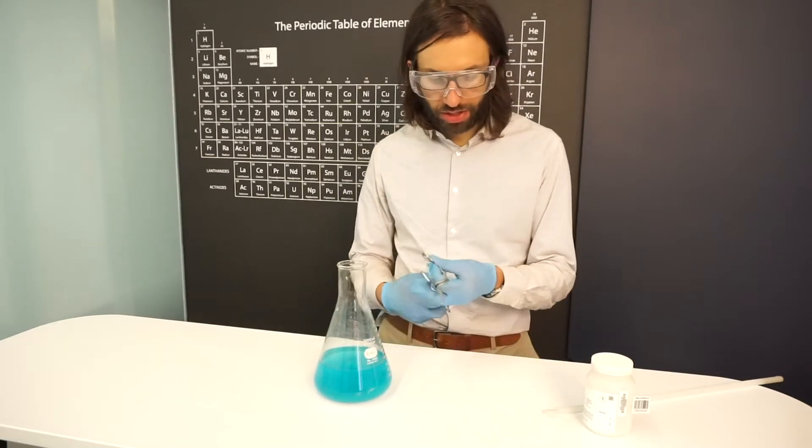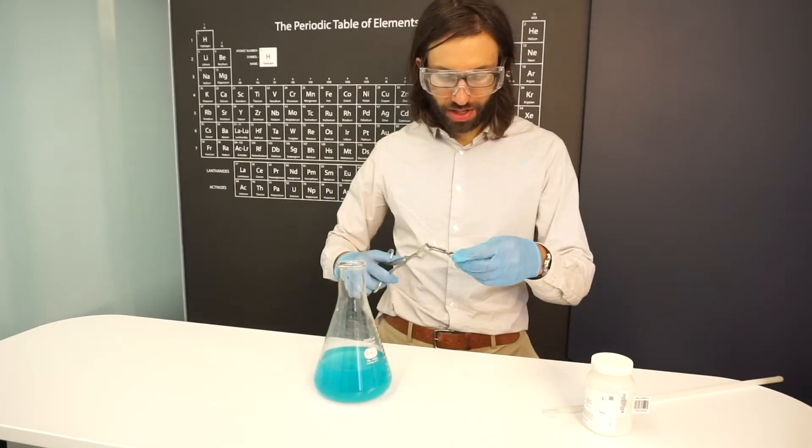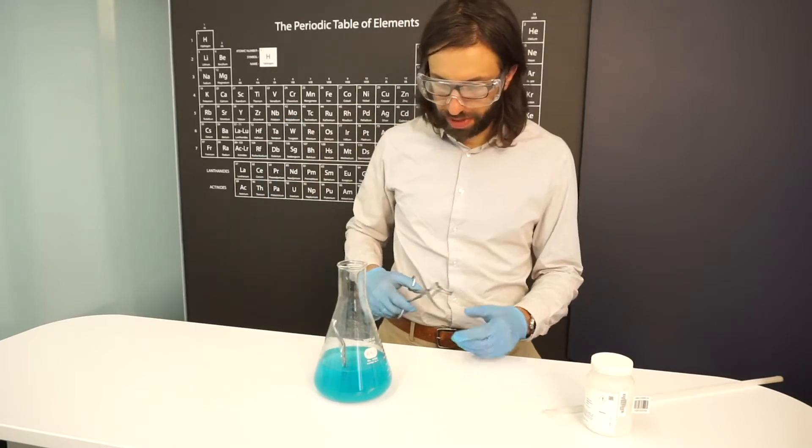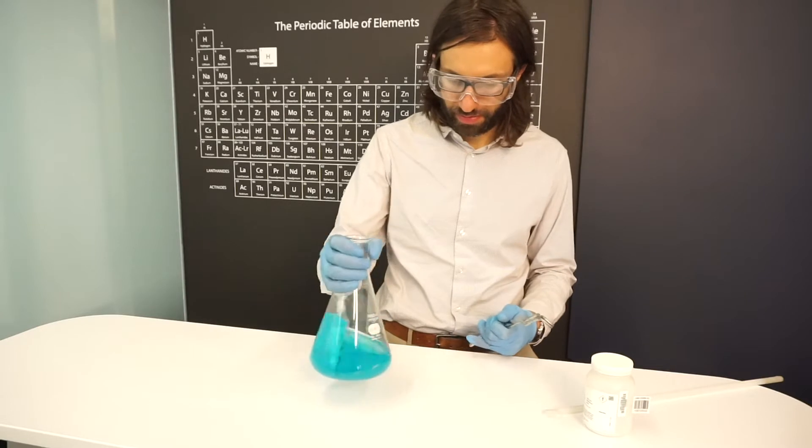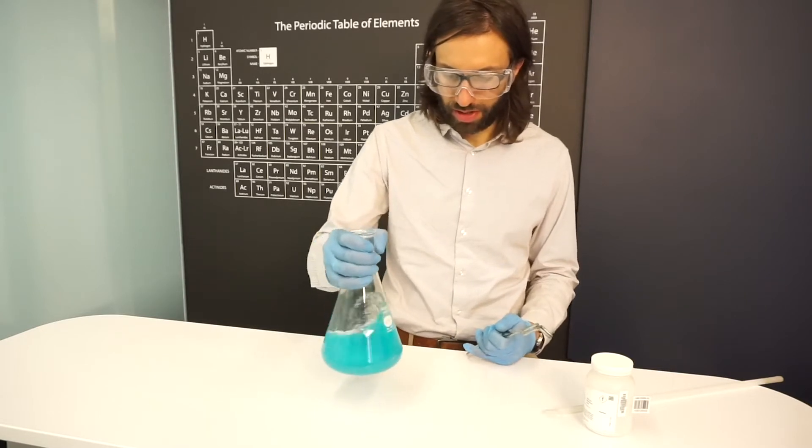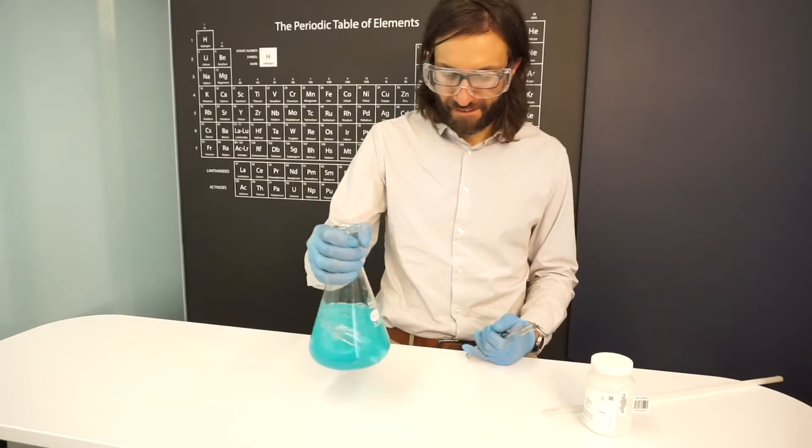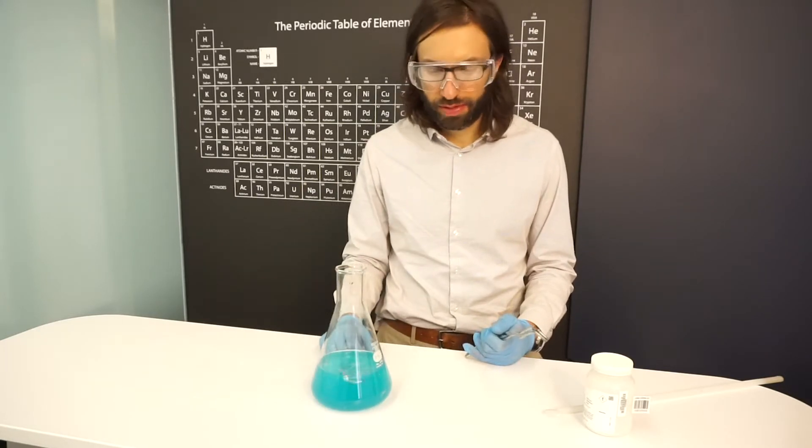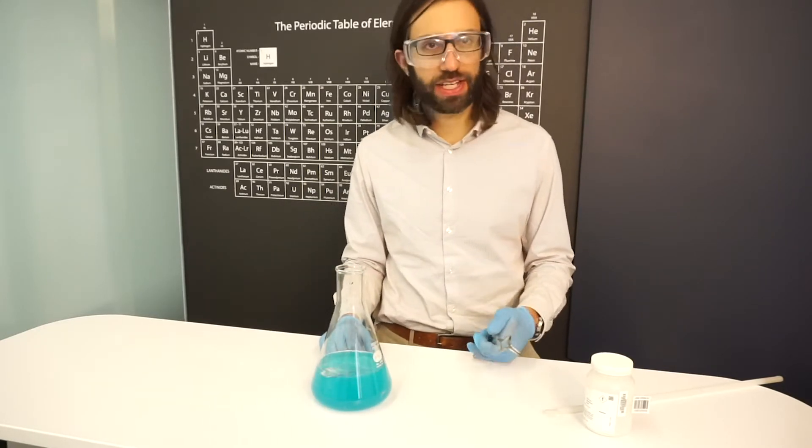And we're going to try to do a galvanic displacement reaction with aluminum foil. Put a piece of aluminum in there, swirl it around, and you can heat this up or wait all day, nothing's going to happen.